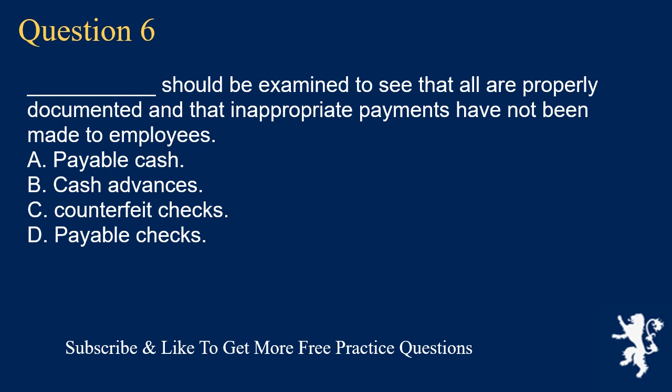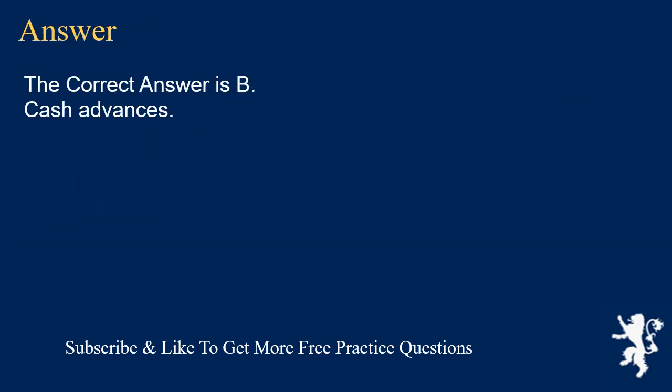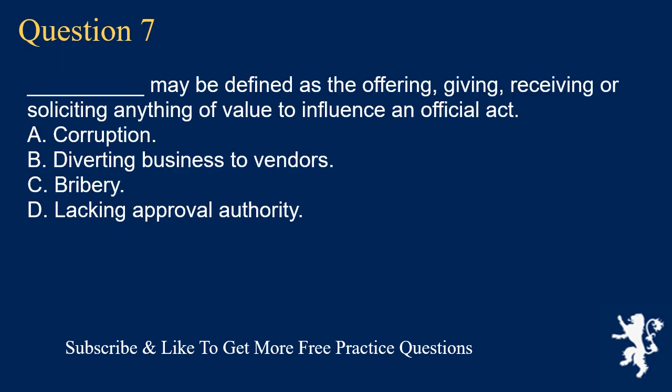Question 6: Underscore should be examined to see that all are properly documented and that inappropriate payments have not been made to employees. A. Payable cash. B. Cash advances. C. Counterfeit checks. D. Payable checks. The correct answer is B. Cash advances.